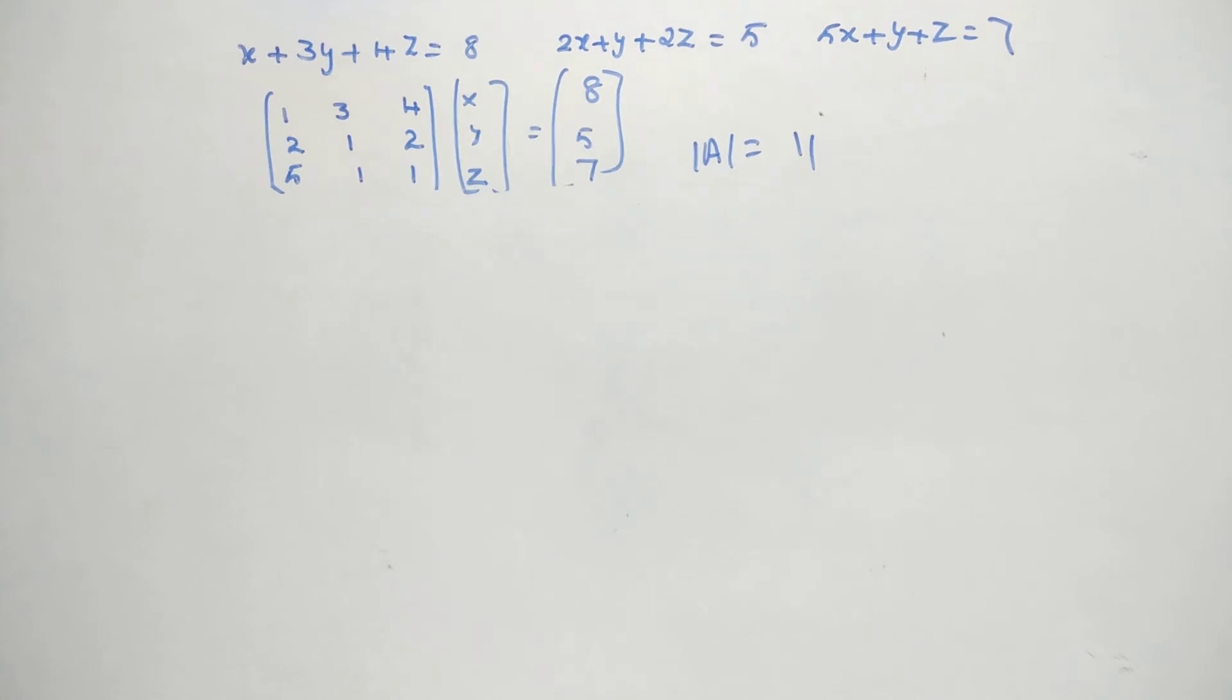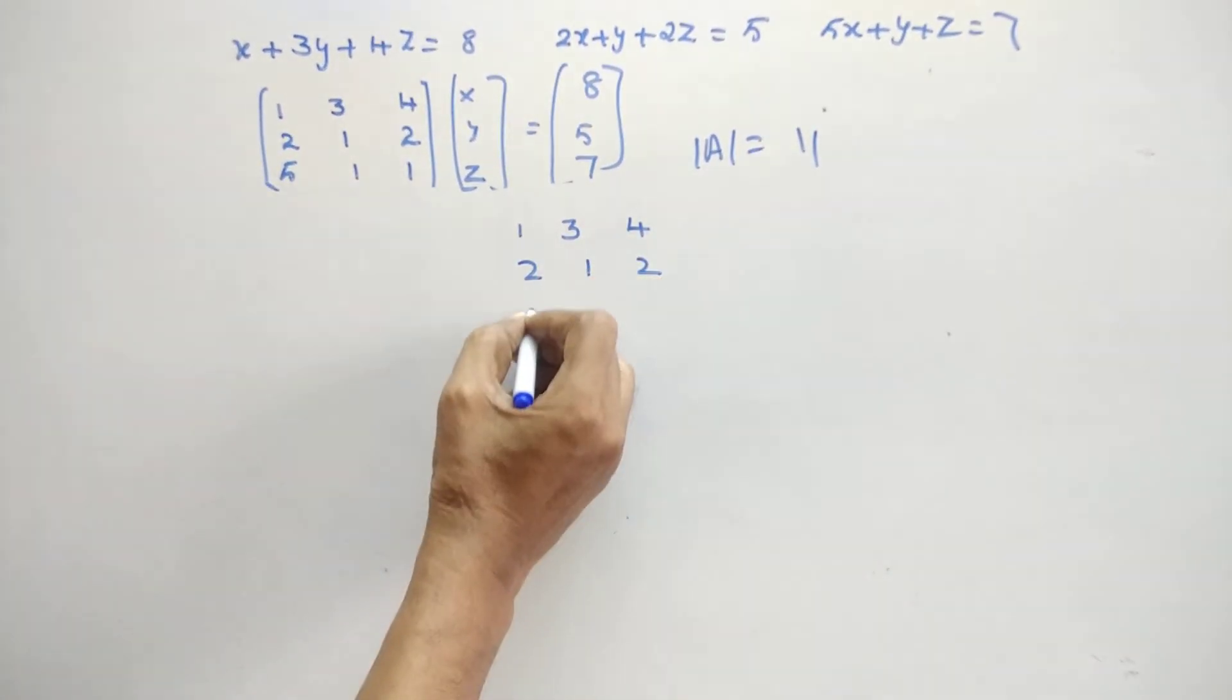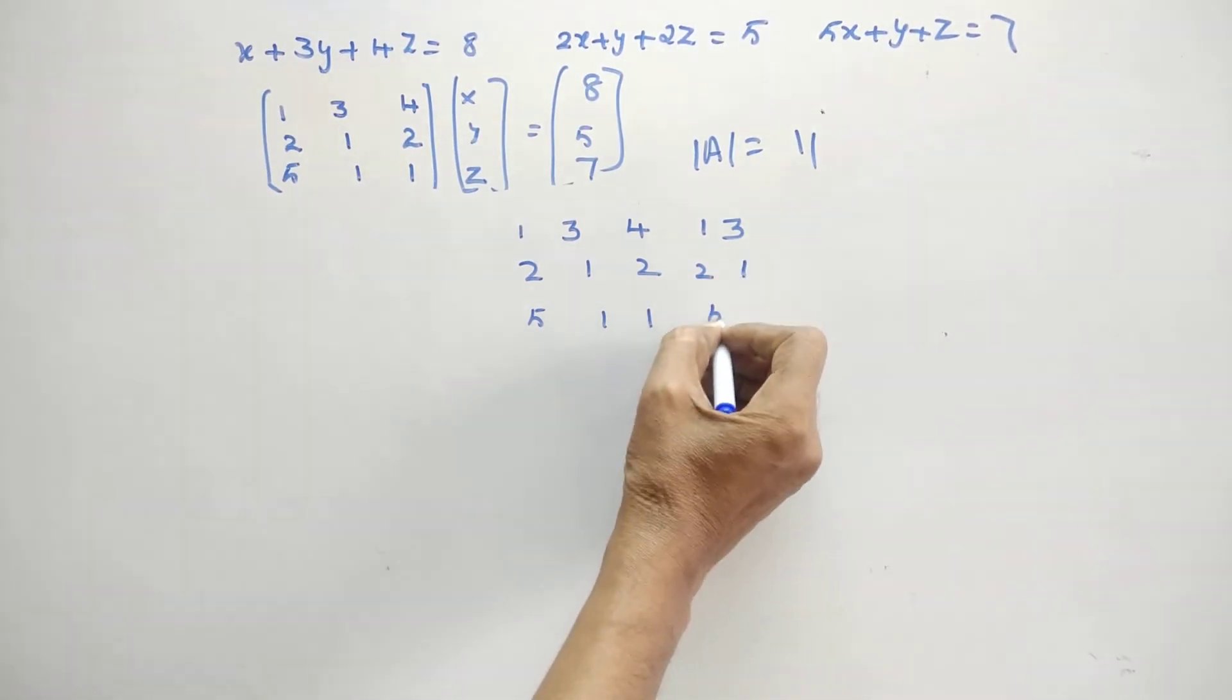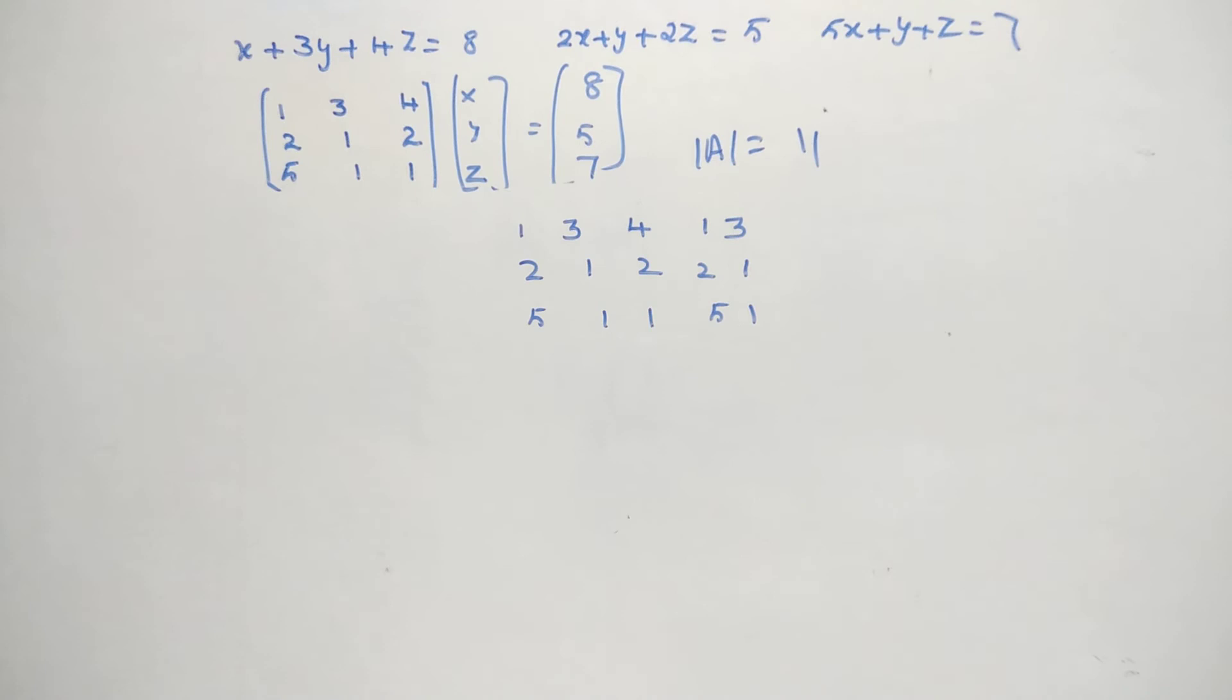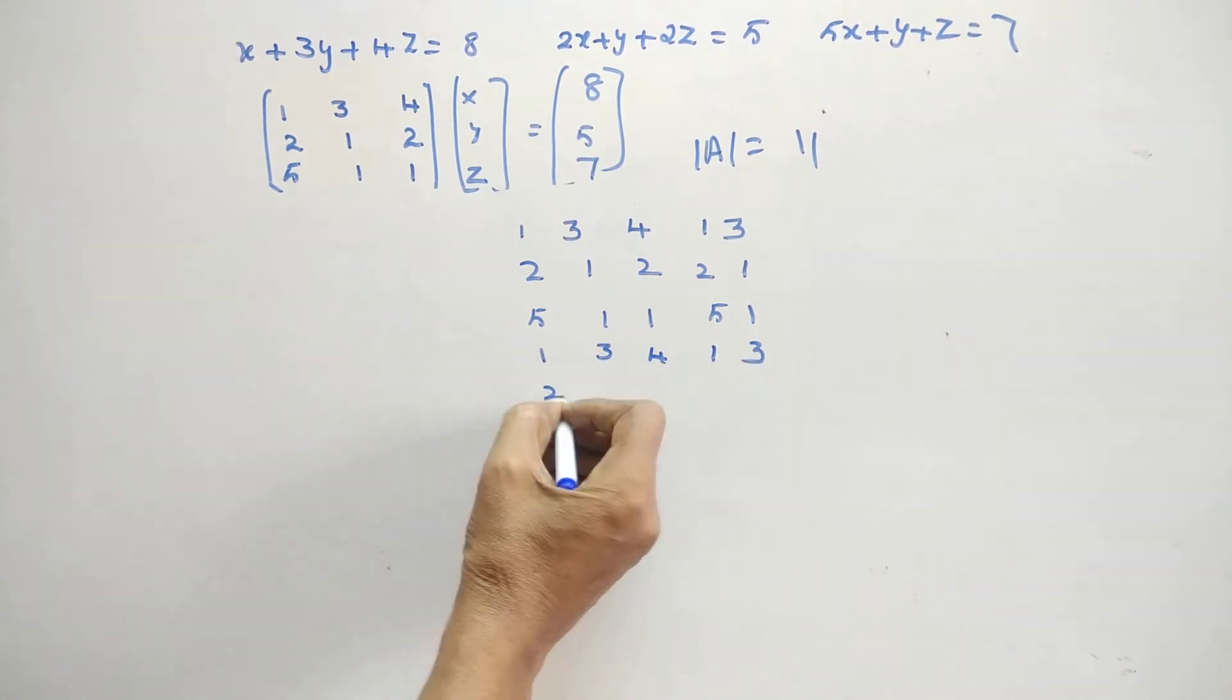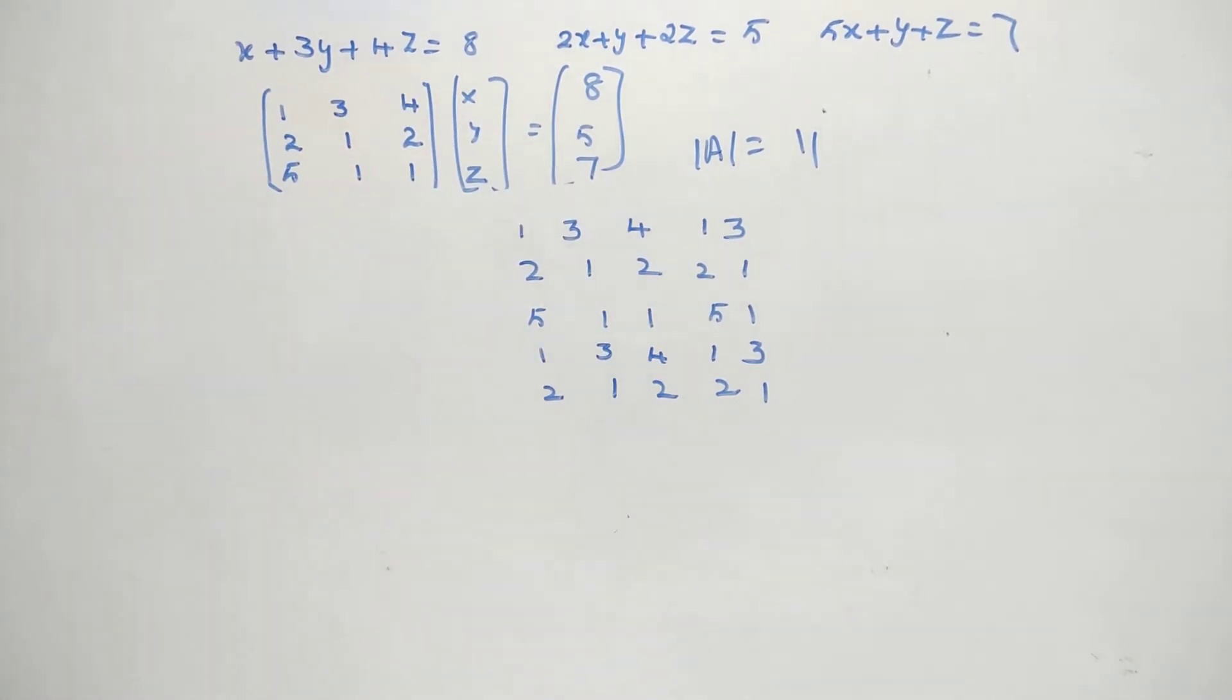Now, how to find that adjoint matrix quickly? Very simple. You write down the given matrix: 1, 3, 4, 2, 1, 2, and 5, 1, 1. Repeat the first two columns. Now it is here, 5 columns and 3 rows. Let us make it as a square matrix by introducing two more rows. That is, first two rows I am writing again. Is it alright? What I have done? I have written the matrix, and then I extended the first two columns, and then I have written the first two rows as it is, so that it becomes a square matrix. After that, what you do? You don't consider this, and also don't consider the first column. First one, first column you delete.